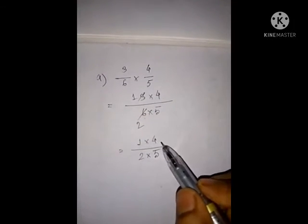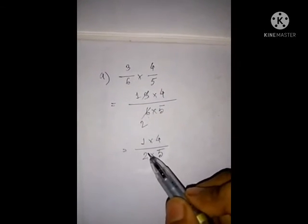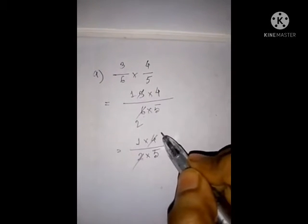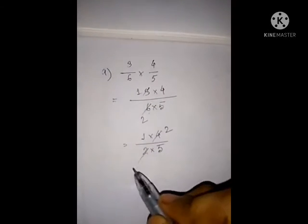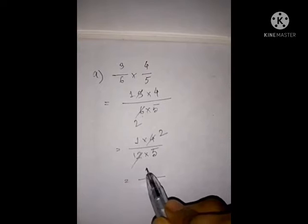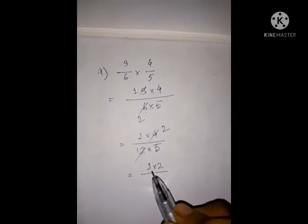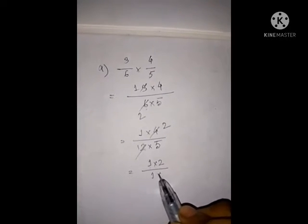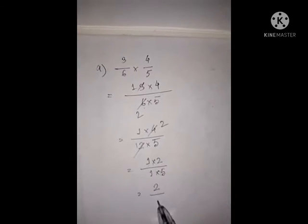Here, 4 will be divisible by 2. We can cut 4 by using this 2. 2 to the 4. So, above, this is left 1 into 2 and 1 into 5. So, the answer will be 2 by 5. Understand?